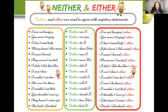Remember, neither and either are used to agree with negative statements — negative meaning no. So you're agreeing with the 'no.' For example, I'm not hungry — you are agreeing that you are not hungry too. You see the conjunction I'm saying: too. So let's learn some more.